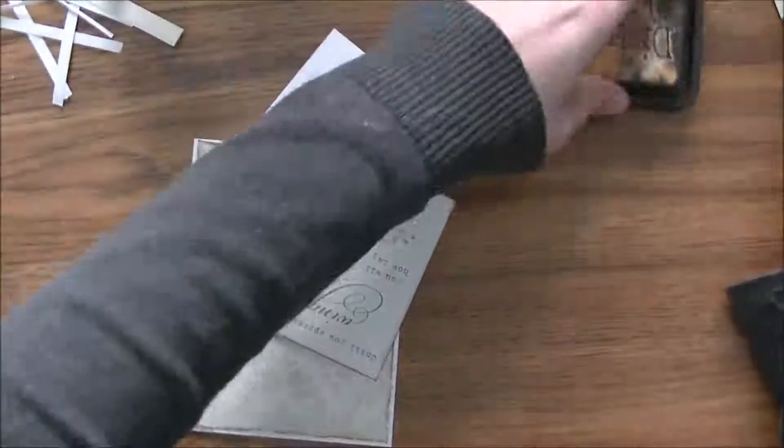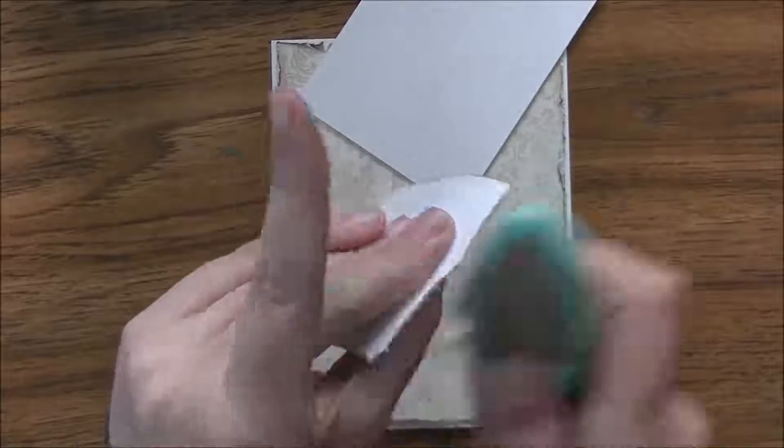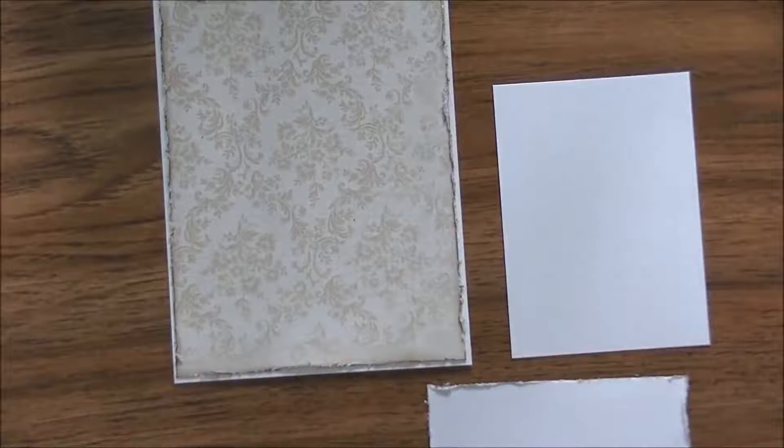It's not too big and not too small and it just kind of peeks out just to give it that little bit of breakup between the patterns. Again, I'm distressing this with the Walnut Stain distress ink and then I'm going to take my Prima distressing tool and I'm going to rough up all the edges all the way around and adhere it onto the cardstock.